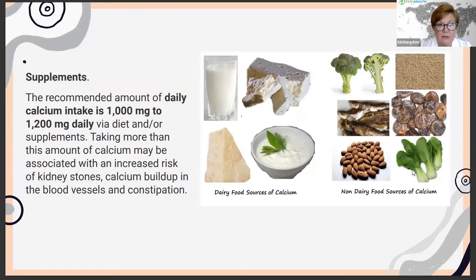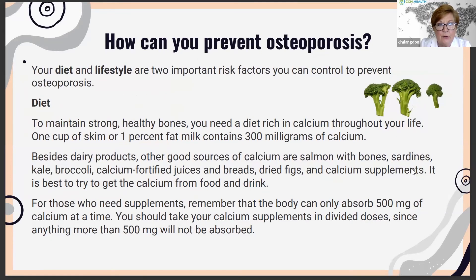For supplements, you should be on calcium and vitamin D. Almost everybody is deficient in vitamin D. Calcium intake should be between 1,000 to 1,200 milligrams daily; however, it can build up in the blood vessels and lead to constipation, so you need to be careful how much you take and how frequently throughout the day. Since you can only absorb 500 milligrams at a time, it's best to take your calcium supplements in divided portions or get it through your diet — milk, salmon, sardines, broccoli, fortified juices and breads, and other similar sources.